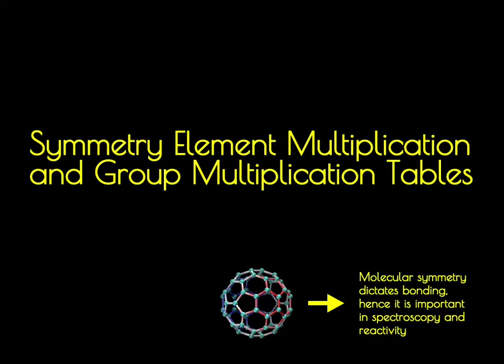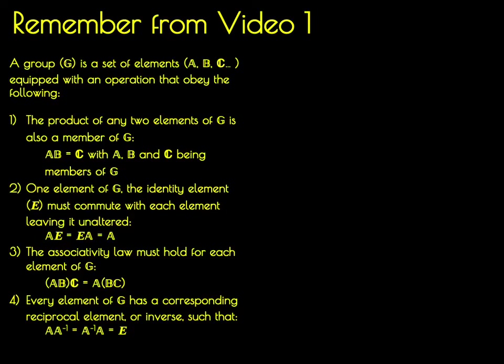In this video we'll learn how to combine symmetry elements together and how to construct group multiplication tables. Recall from the first video of this series that a group is a set of elements that can combine together under some operation obeying four rules. Molecules, if we can take their symmetry elements, will have all those symmetry elements form a group.